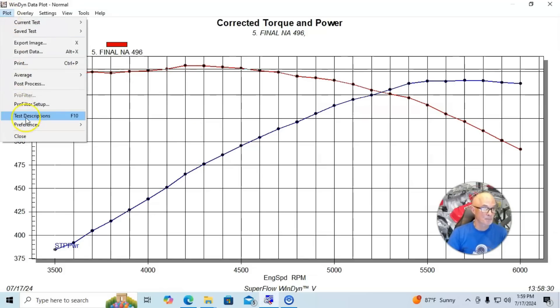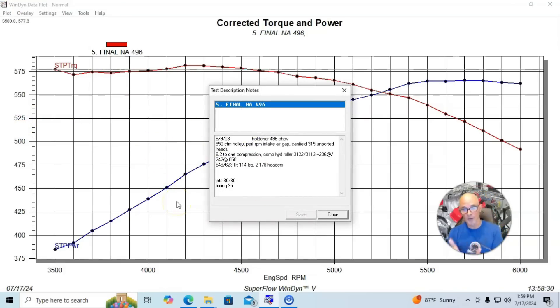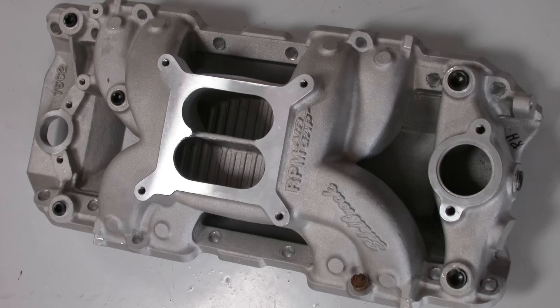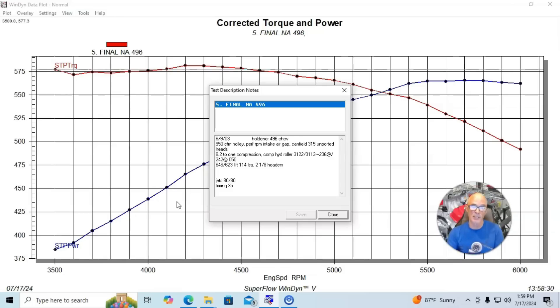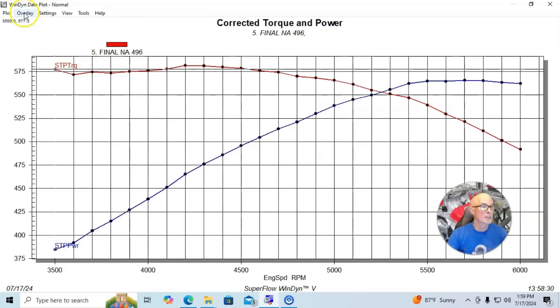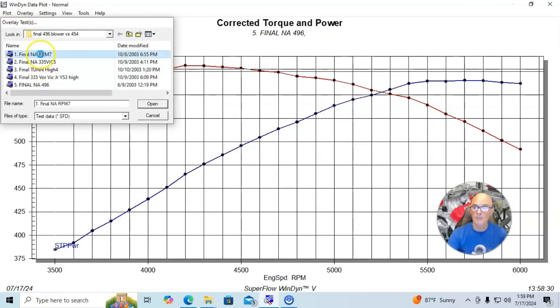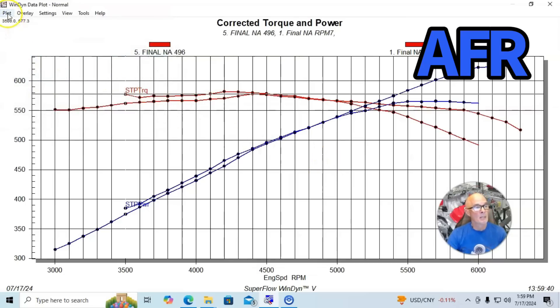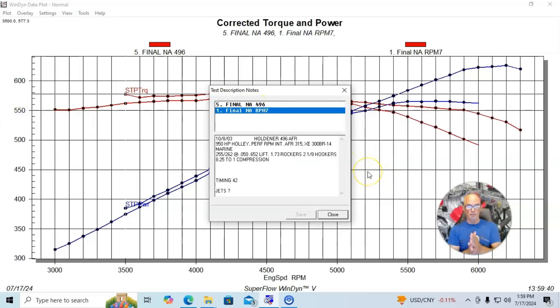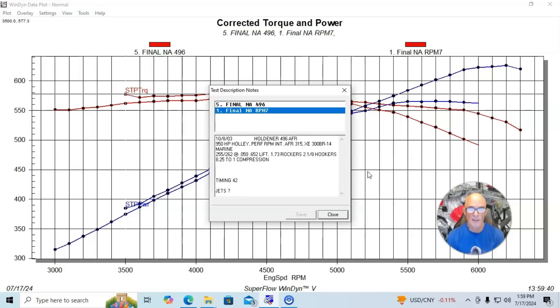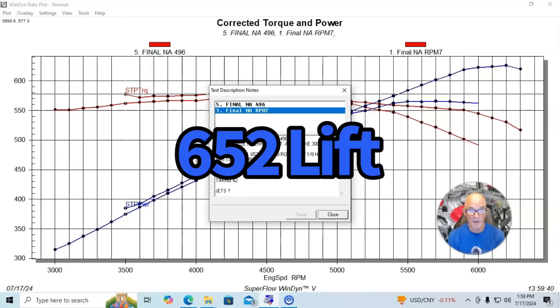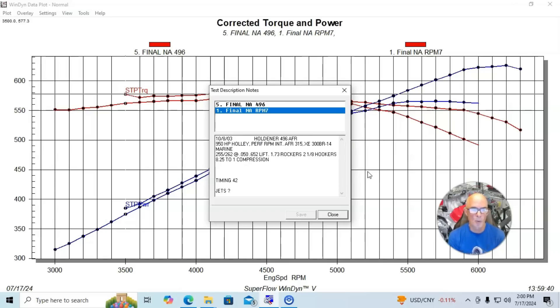What we did was change the camshaft and the cylinder heads and then we ran three different intake manifolds. We went from our Canfield headed version with the 315 unported AS-CAS Canfields. We installed a bigger solid roller camshaft, although it's still kind of a street roller, the Comp Cams XE300BR-14, which is 652 lift, but a good bit more duration, 255, 260, 250, and 114 degree lobe separation angle.